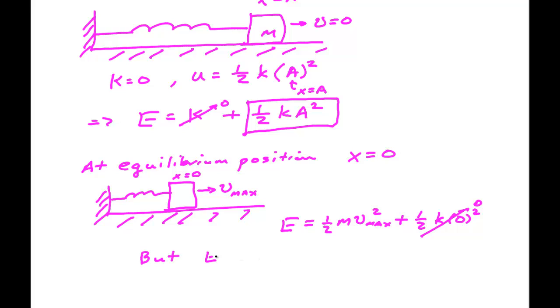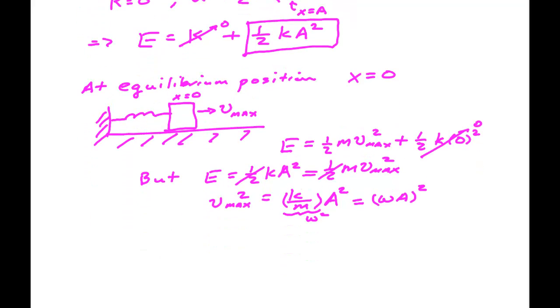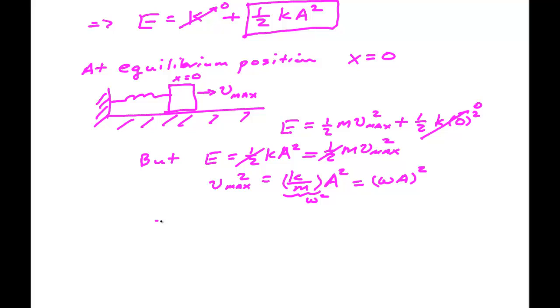But E is one half K A squared. And that has to equal one half MV_max squared. Let me kill the halves. V_max squared is equal to K over M A squared. But this is ω squared. So that's ω A squared. Therefore, V_max is equal to ω times A.